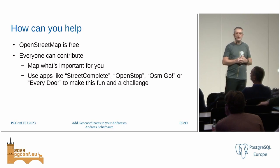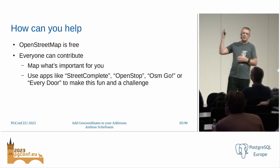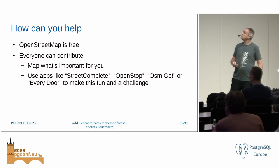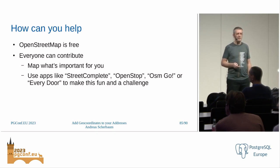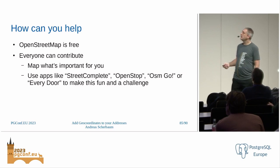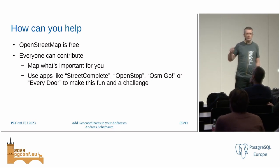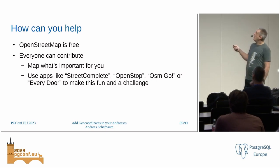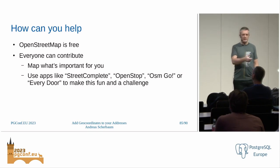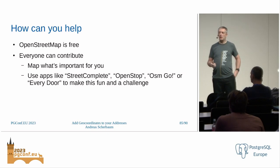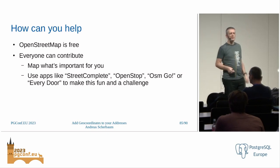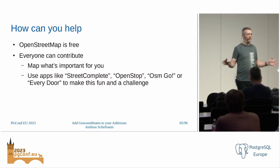OpenStreetMap itself is free — anyone can use it, and this is basically free of charge what I did here. Everyone can contribute to OpenStreetMap, so if you do not have an account, please get yourself one. Go out, map what's important for you — where you live, your area, parks, shops, whatsoever. There are a couple of applications you can use for this — you don't have to go on the OpenStreetMap website itself and do all the detailed editing. Apps like StreetComplete or OpenStop let you just walk around your neighborhood and answer questions like 'how many floors does this building have?' or 'what color is the roof?' and you get a very nice map of where you're living.